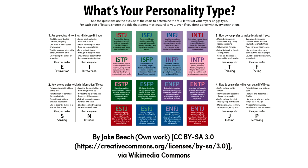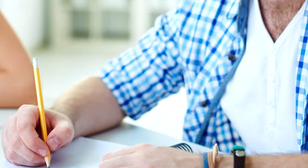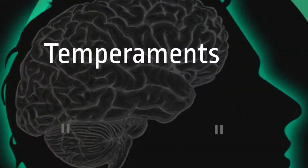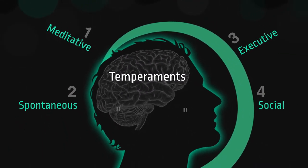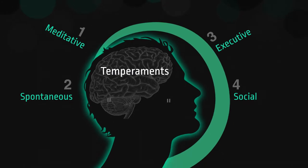The Myers Briggs Type Indicator was developed by Katherine Cook Briggs and her daughter Isabel Briggs Myers. They identify differing preferences on how people perceive the world around them and ultimately make decisions. Briggs proposed that all personalities are derived from four temperaments: meditative, spontaneous, executive, and social. These temperaments became the building blocks of Briggs and Myers' research.